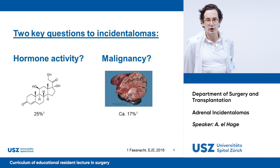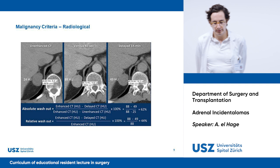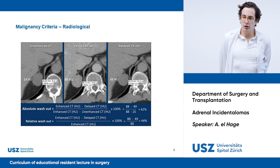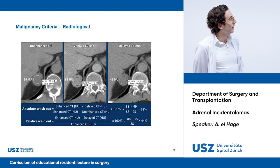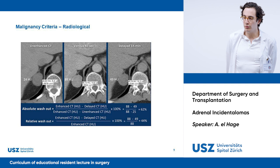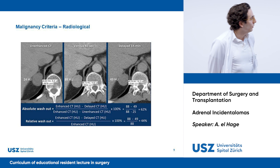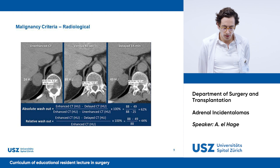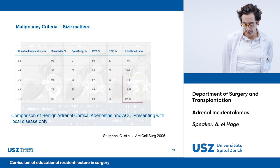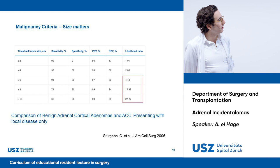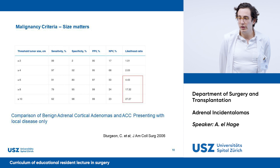How do you assess malignancy? On one hand, you have the radiological criteria. You can look at the Hounsfield units: in a non-contrast CT, anything below 10 Hounsfield units is probably benign. You also look at the washout on contrast CTs — an absolute washout of 60% and relative washout of 40% are probably benign. Another criterion is size. This study from Sturgeon in 2006 has shown that the bigger the tumor, the higher the likelihood ratio of it being malignant, up to 27 for tumors of 10 centimeters or more.